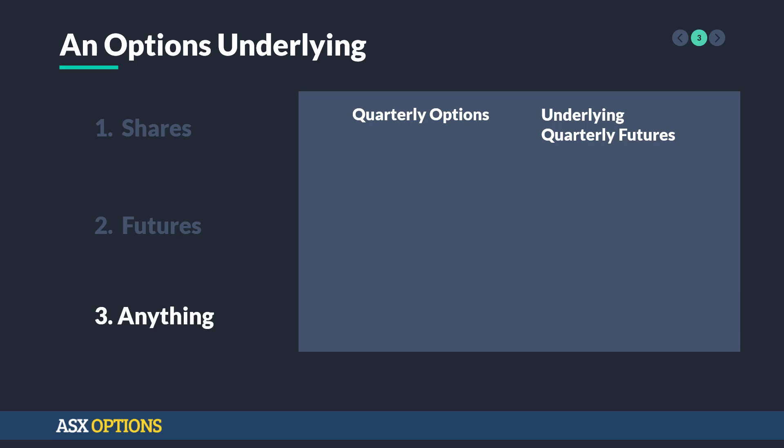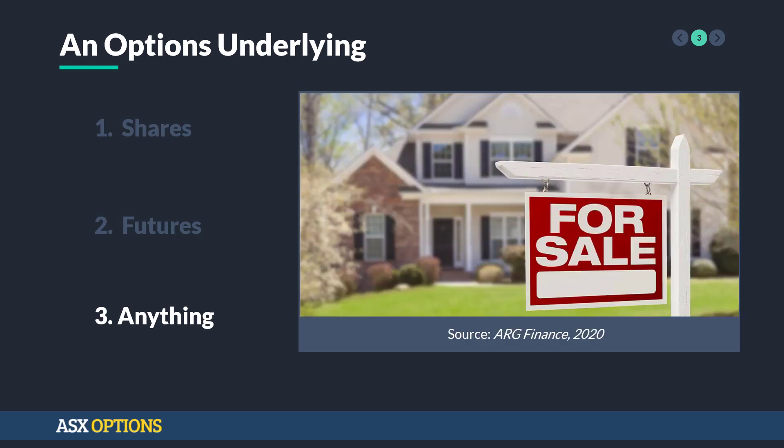You can also have an option's underlying be absolutely anything. A good example of this was in the first tutorial when we talked about the example of a house. So really, an option's underlying could be absolutely anything.